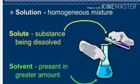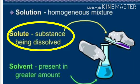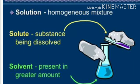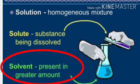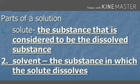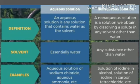One nanometer equals 10 to the power minus 9 meters. A solution has two components: solute and solvent. The solute is the component that is dissolved in the solvent and is present in lesser quantity. The solvent is the component present in larger amount in which the solute dissolves. Based on the type of solvent, solutions are of two types: aqueous and non-aqueous. In an aqueous solution, water is present as the solvent.